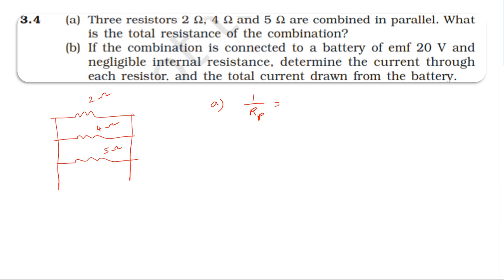The reciprocal of effective resistance is equal to sum of reciprocal of individual resistances. So one by R effective equals one by R1 plus one by R2 plus one by R3. That's one by 2 plus one by 4 plus one by 5, which equals 19 by 20. So the effective resistance in parallel is 20 by 19 ohm.